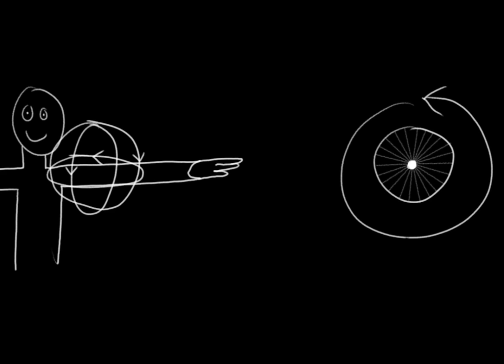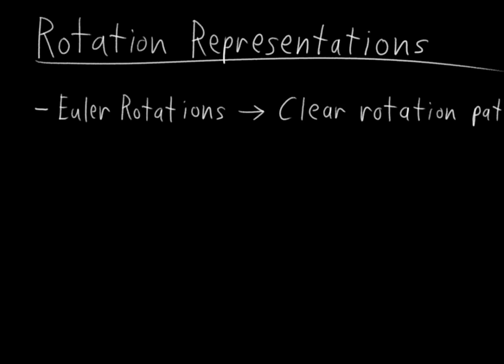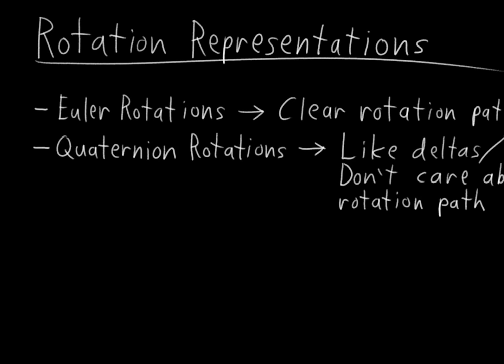All of this weird theoretical stuff also strongly influences what rotation representation we choose for different rig controls. Some rotation representations, like Euler rotations, have very clear rotation paths. Other rotation representations, like quaternions, are much more like rotation deltas and don't care about the rotation path. And these differences between rotation representations will inform which rotation representation we choose for each control.